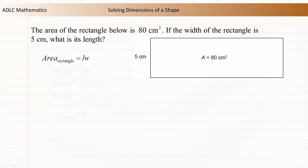The area formula for a rectangle is length times width. Substitute the known measurements for area and width.